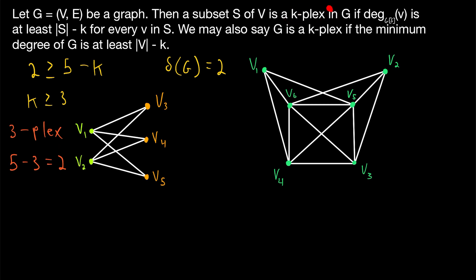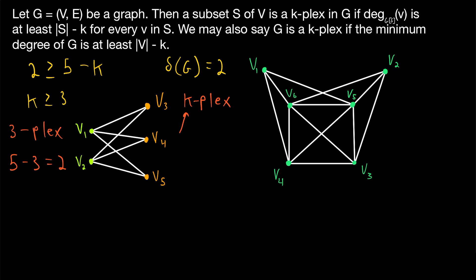It's helpful to think of k in the term k-plex as the number of vertices that each vertex is allowed to not be adjacent to, because the number of vertices that a vertex must be adjacent to in a k-plex depends on the order of the k-plex. So each vertex in any three-plex is not adjacent to at most three vertices in the three-plex. Since this graph has five vertices, each vertex must be adjacent to at least two vertices. If the graph had seven vertices, however, then for it to be a three-plex, each vertex would need to be adjacent to at least four vertices. So that's why it's really useful to think of k as an allowance for non-neighbors: in a k-plex, each vertex is allowed to have at most k vertices that are not neighbors.